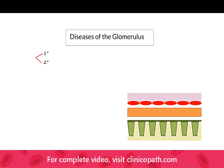Glomerular diseases are pretty important. When we talk about the causes of end-stage kidney disease in the United States — meaning people on dialysis — by far and away the number one cause is diabetes mellitus. The second commonest cause is hypertension, which is not a disease of the glomerulus but of the vasculature. Together, these two account for around two-thirds to 70% of all patients on dialysis. Primary glomerulopathies account for only around one to two percent, so overwhelmingly kidney disease is driven by diabetes mellitus and hypertension.